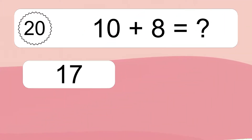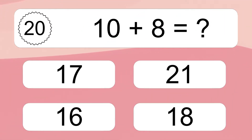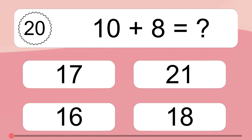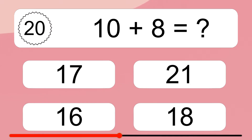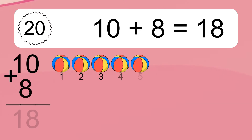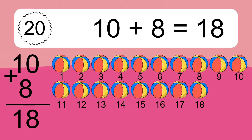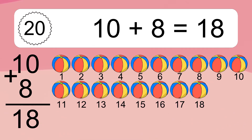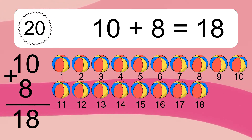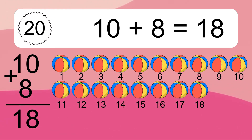10 plus 8 equals what? 10 plus 8 equals 18. Let's count it. 1, 2, 3, 4, 5, 6, 7, 8, 9, 10, 11, 12, 13, 14, 15, 16, 17, 18.